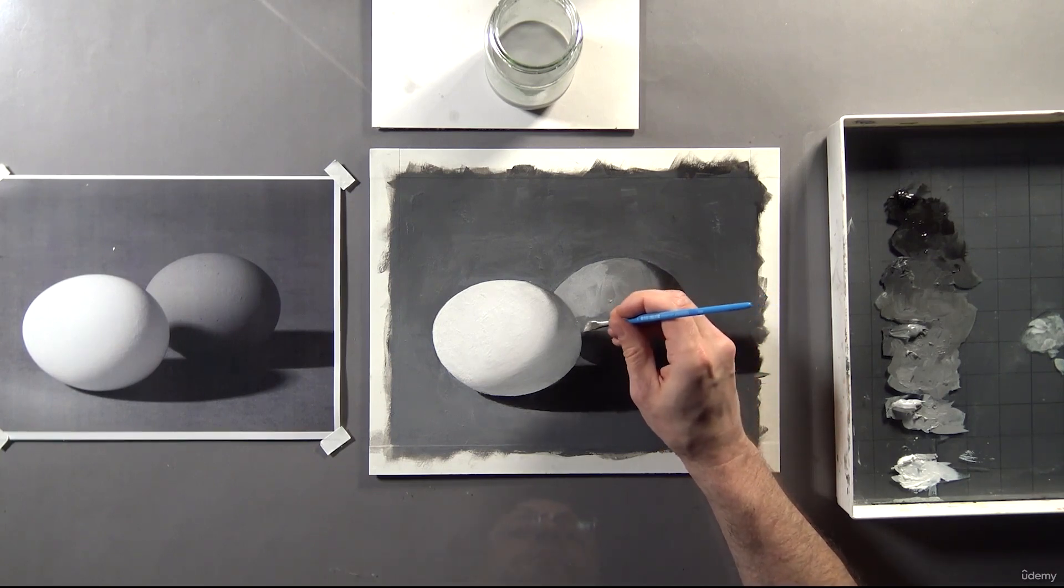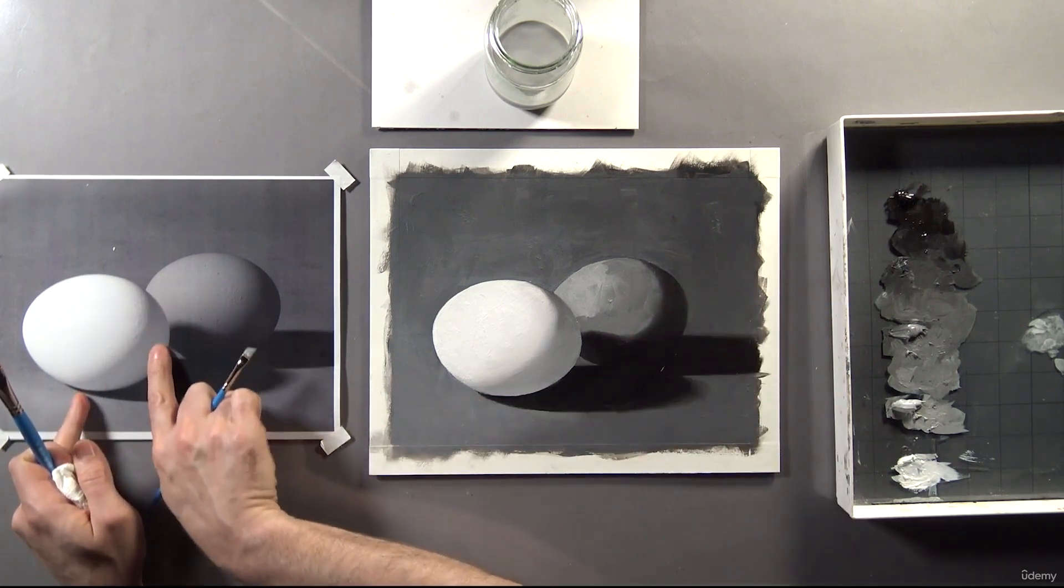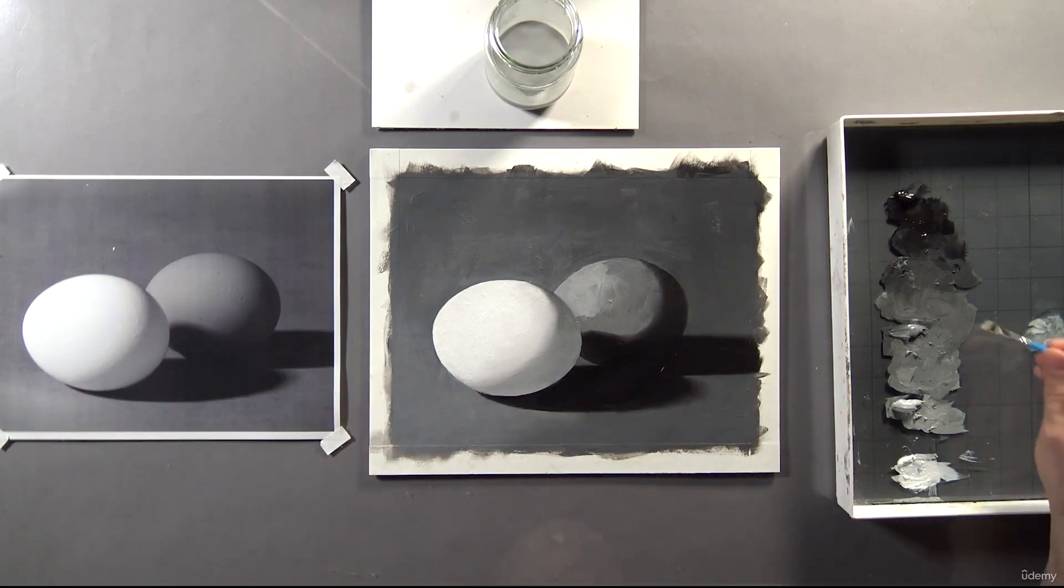Also notice that the range of values in the gradient on the white egg's shadow is the same range of values in the brown egg's light and halftones.